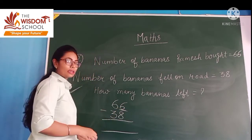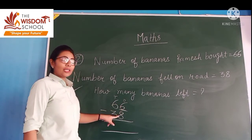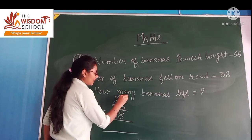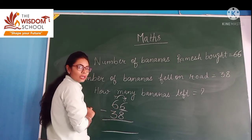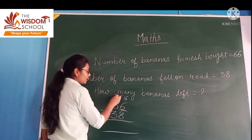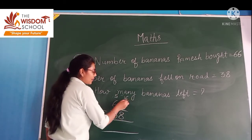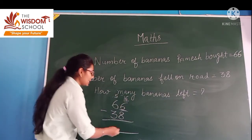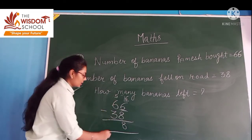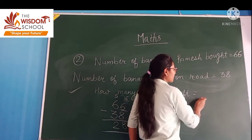We have 6 here on the ones place and 6 on the tens place. Can we give 8 when you have 6 things? You cannot. So 6 will borrow 10 from the 6 in the tens place. This became 16 and the tens place is left with 5. 16 minus 8 is 8. Now 5 minus 3 is 2. So Ramesh is left with 28 bananas.